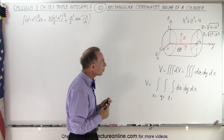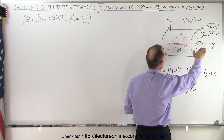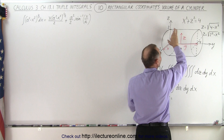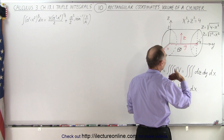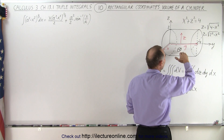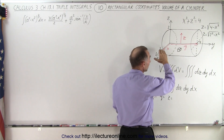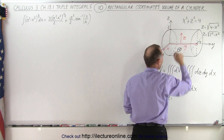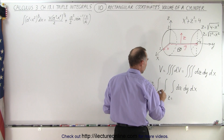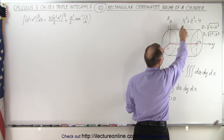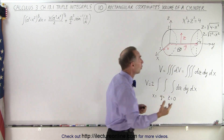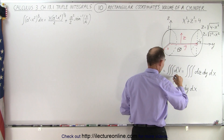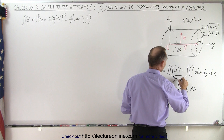What about the limits? In the z direction, if we start from the xy-plane and go up, depending on where we are in the xy-plane, we won't hit the top height of 2 — we'll hit the side of the cylinder. So the limits in z go from the xy-plane up to the cylinder surface. Since the bottom half is symmetric, we can integrate from 0 to the maximum height and multiply by 2. The cylinder equation is x² + z² = 4, so z equals the square root of 4 minus x².